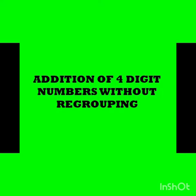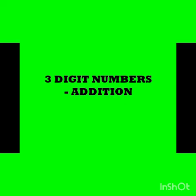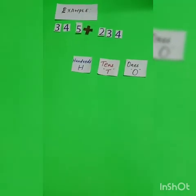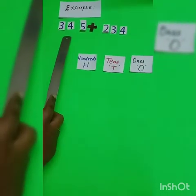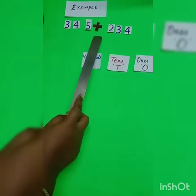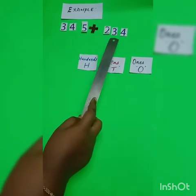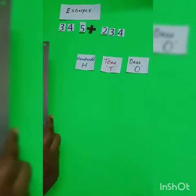We begin with addition of three-digit numbers without regrouping. Let us add the three-digit numbers. Example, 345 and 234. So let us start.